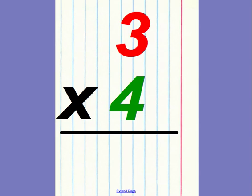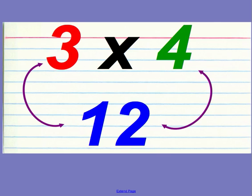So on one side we'll do three times four — notice there's no answer. And on the other side I'll put the answer, but look how I write it. I write it long ways: at the top I write three times four again, just like the front, but down at the bottom I have my answer.